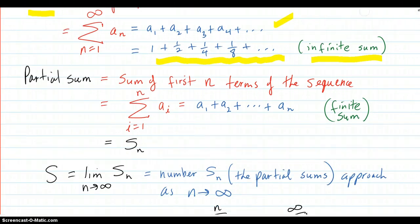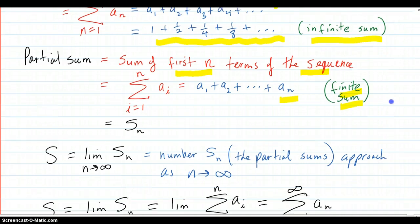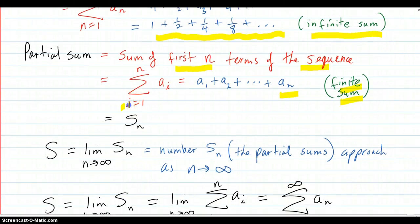So it would be the sum of all these sequence terms on to infinity, so it's an infinite sum. A partial sum is a sum of the first n terms of the sequence, so it's a finite sum. You stop at a_n. And that's why I had to write this with the i counter instead of the n, because the n is the last one. And that's called capital S sub n. That's a partial sum.